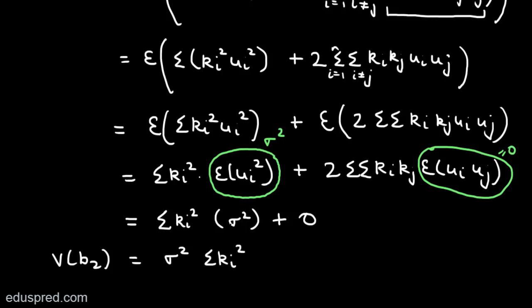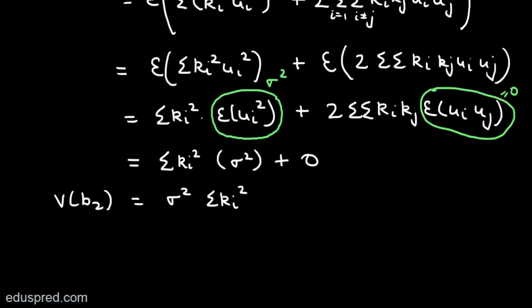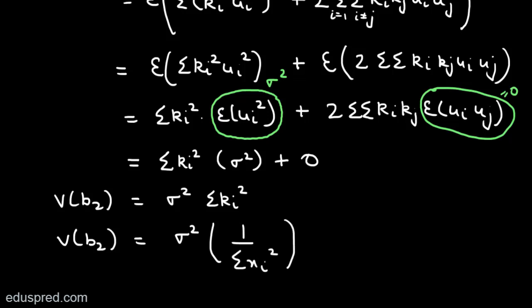There is one last step. Recall from the properties of ki that summation(ki²) = 1 / summation(xi²), where xi is the deviation of Xi from its mean. Therefore, Var(B2) = sigma² / summation(xi²). This is the final formula to calculate the variance of B2 OLS.